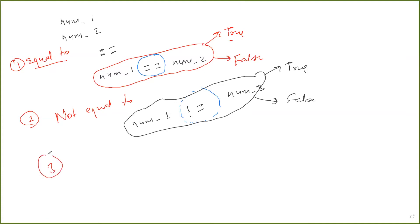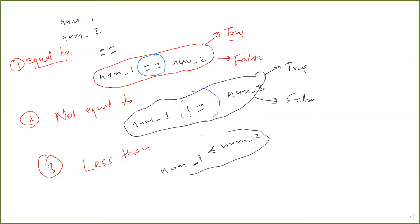Let's look at a third comparison operator: less than. It is also applied on two numbers. If num one is less than num two, it again returns true or false — whether this particular statement is correct or not. If num two is bigger and num one is smaller, then it returns true, otherwise false. Same is the case for greater than. Based on whether your comparison is true or false, it returns the Boolean.